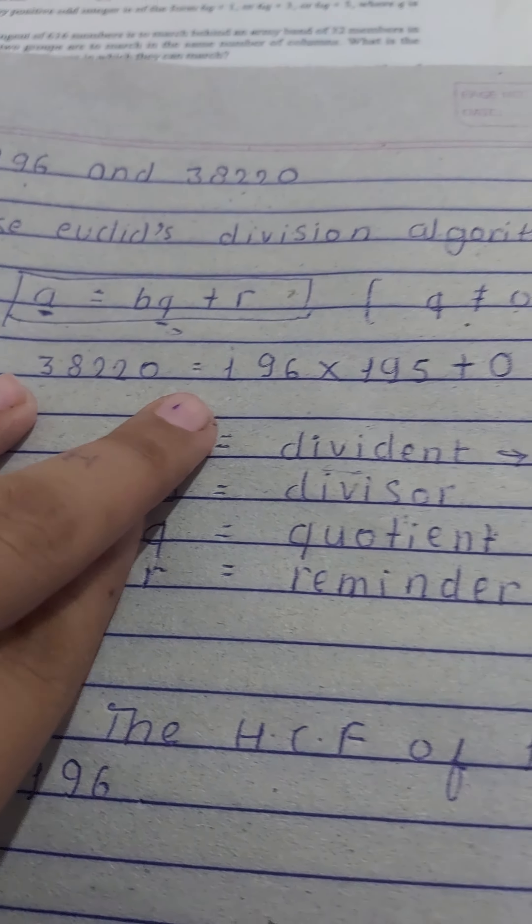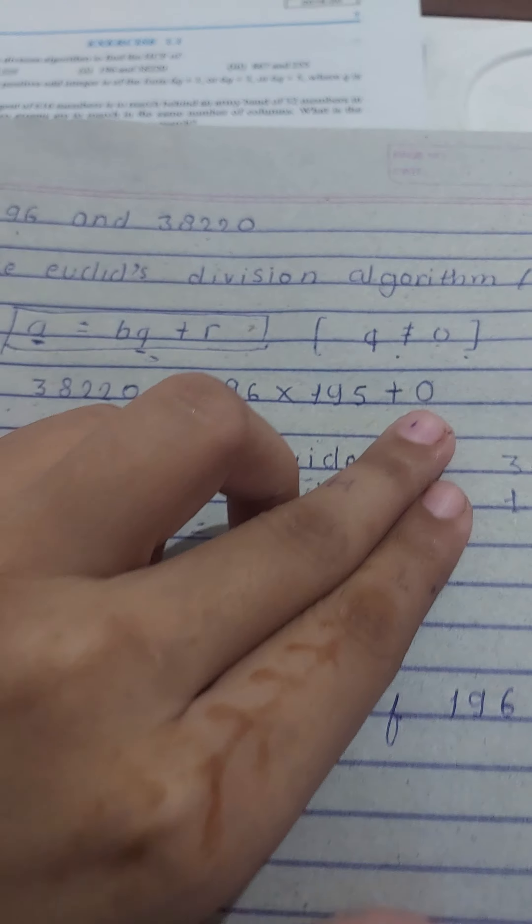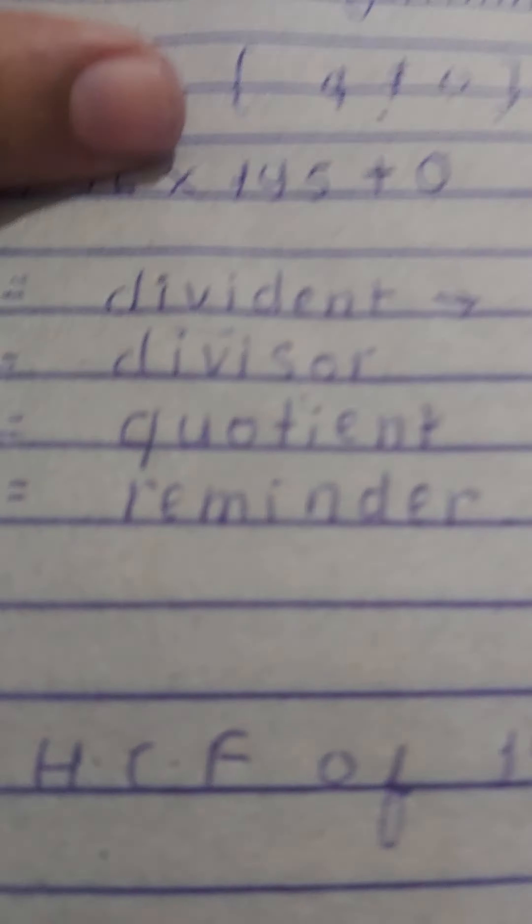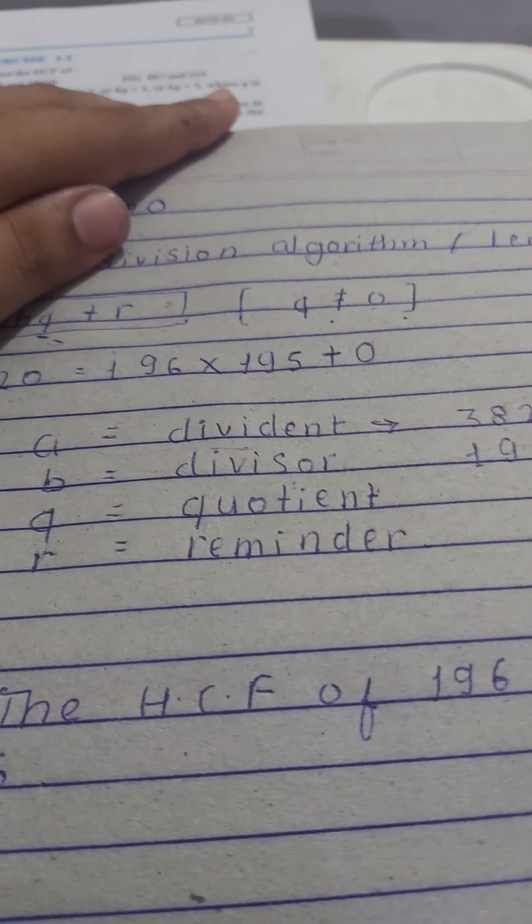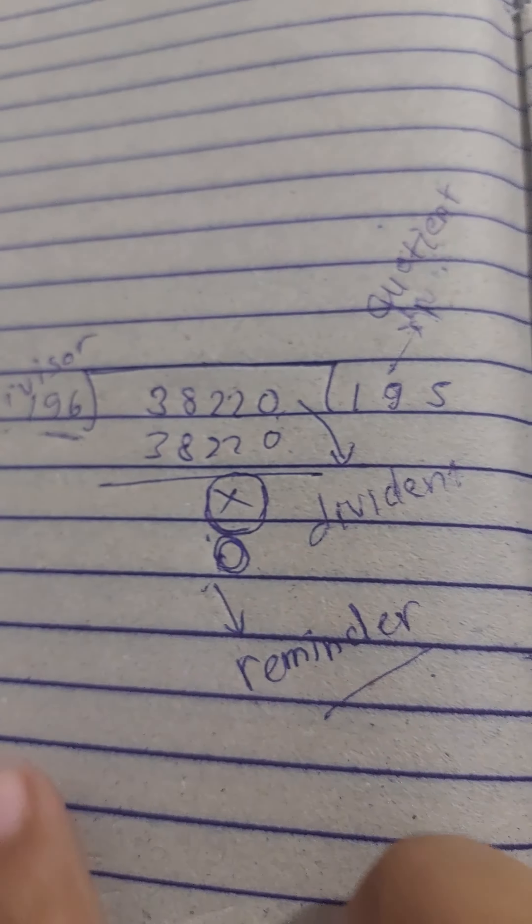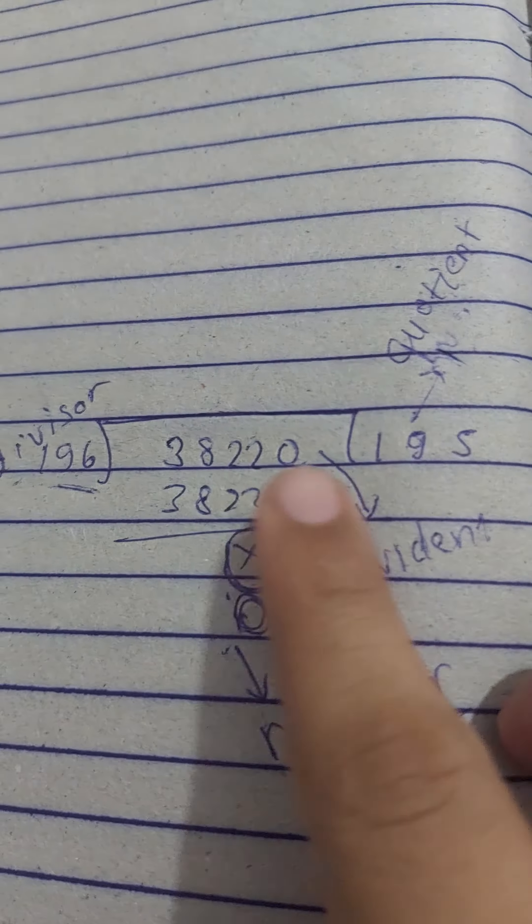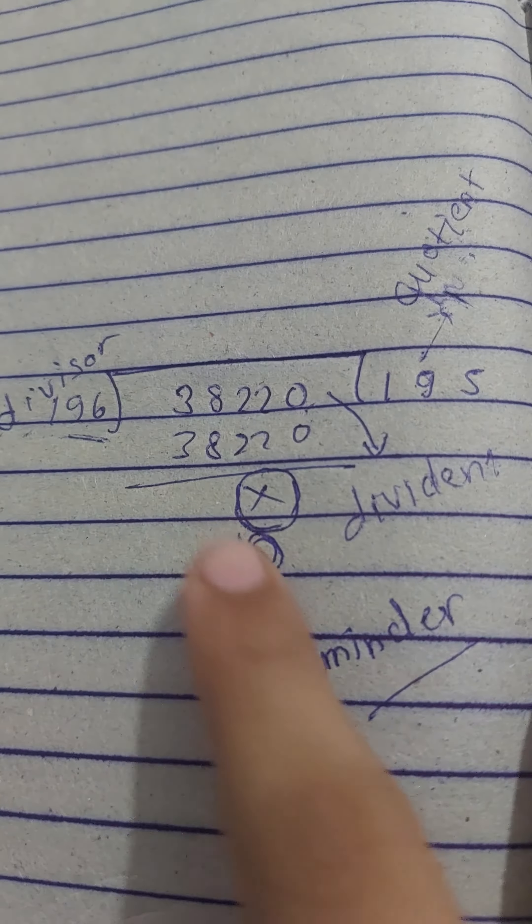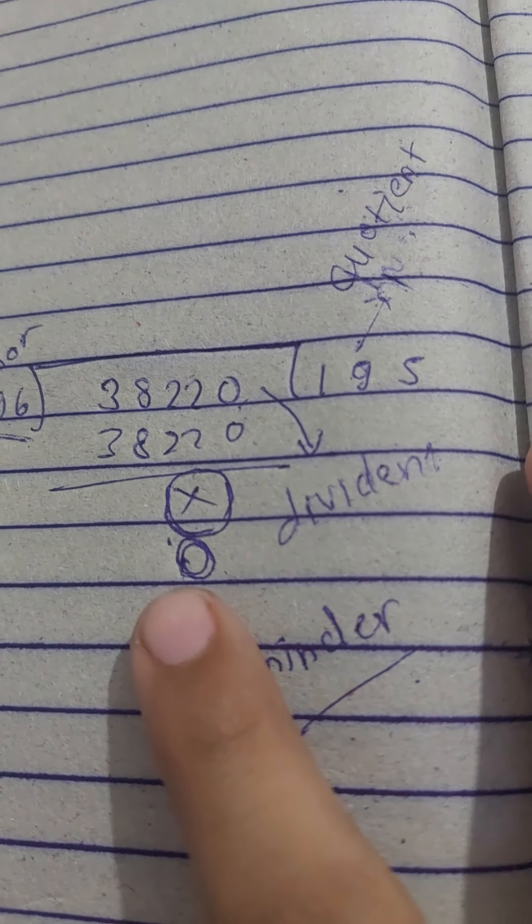When the remainder is not zero, we continue solving. But here when we divide 196 into 38220, we get 195 times with remainder zero, so we're done.